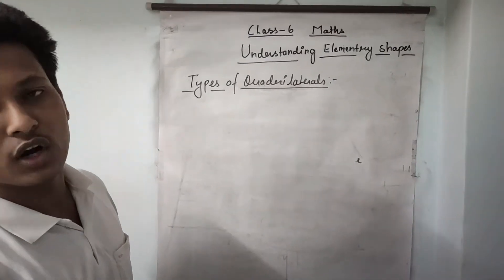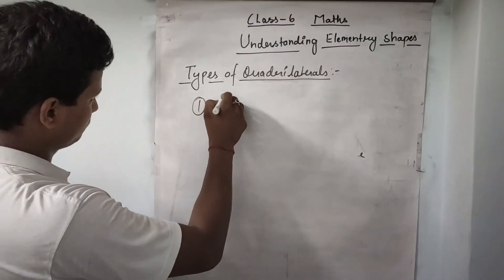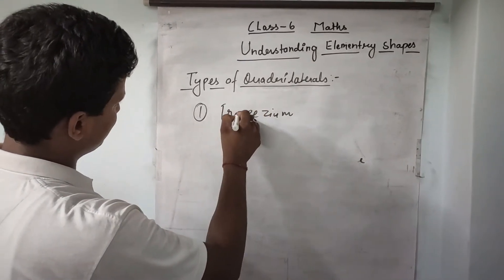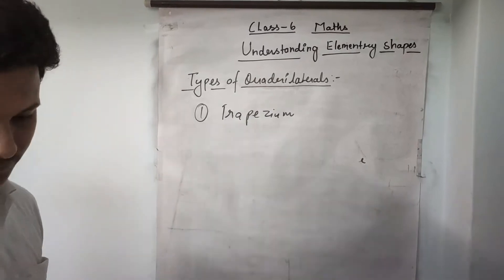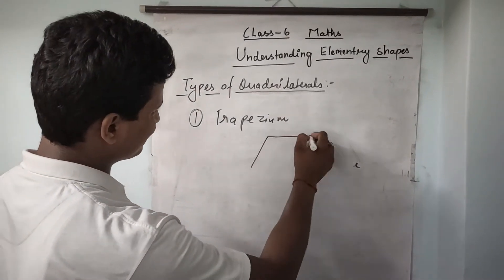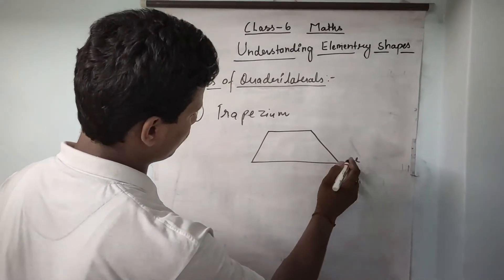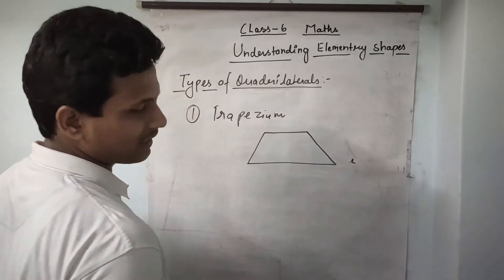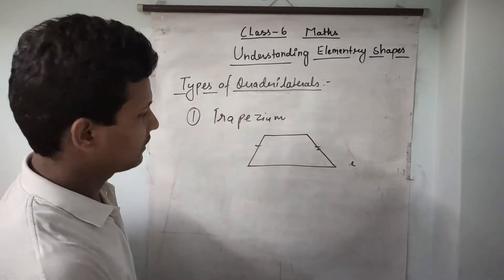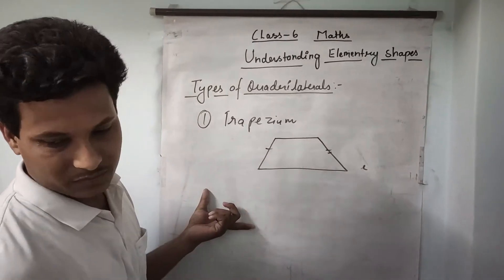Next is types of quadrilaterals. The first type is trapezium. A trapezium is a quadrilateral where one pair of opposite sides are parallel and the remaining sides are non-parallel. Like these two are the parallel sides and these are the different sides. So this is called a trapezium.